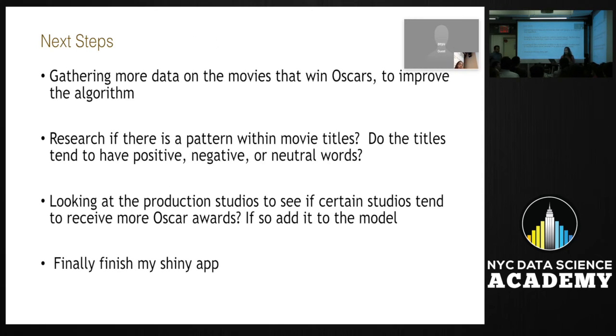For my next steps, gather more data on the movies that win Oscars to improve the algorithm. Research if there's a pattern within the movie titles. Do titles tend to have positive, negative, or neutral words? Looking at the production of the studio, see if certain studios tend to receive more Oscars than others. And if so, add it to my model. And also, I want to look at the area under the curve and pick a threshold that best fits the model to get better results.